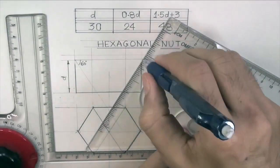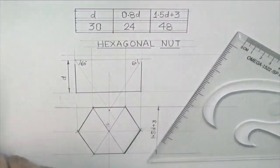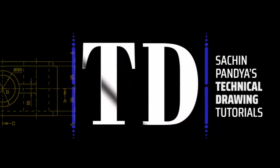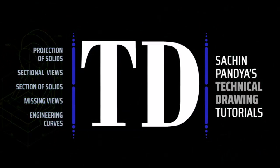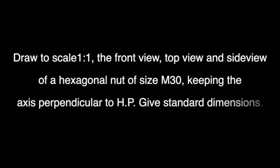In this video, I will show you how to draw a hexagonal nut. Draw to scale 1:1 the front view, top view and side view of a hexagonal nut of size M30, keeping the axis perpendicular to HP. Give standard dimensions.